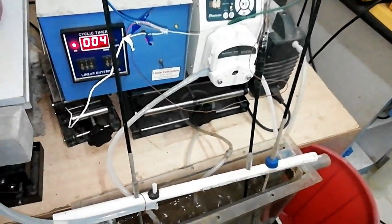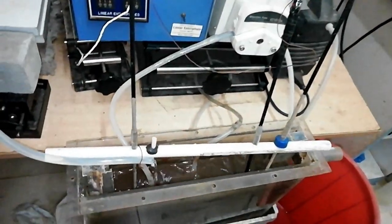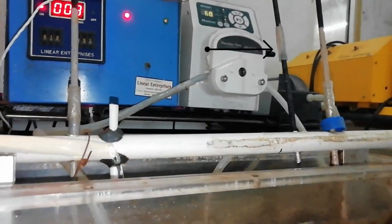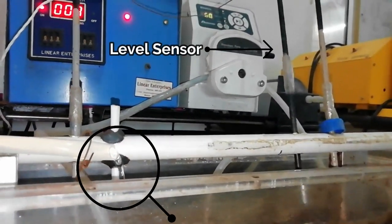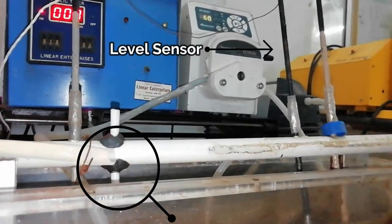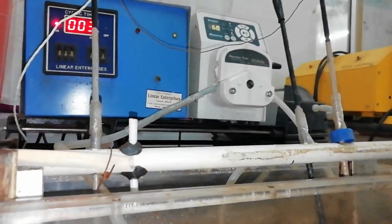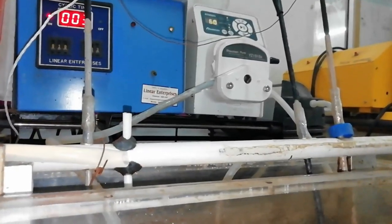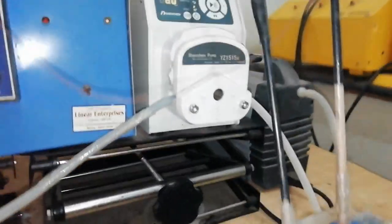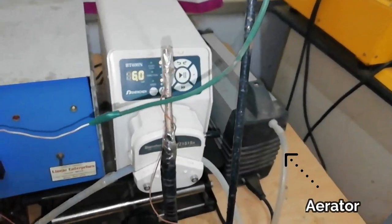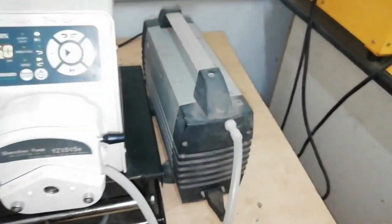So this is an aerobic MBR. You can see the MLSS and level sensor. When we lift the level sensor, the wastewater flows into the system and the aeration is given by an aerator.